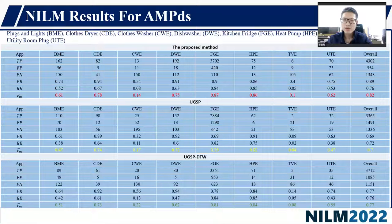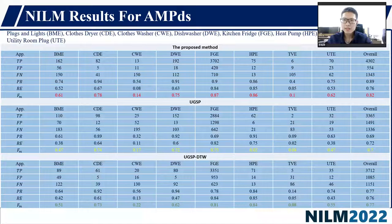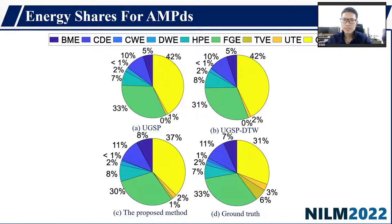Note that the power consumed by the fridge is around 110 W, which is close to the low-power operational states of other appliances, leading to high false positives and low precision and F1 score for UGSP. However, calculating STS similarity based on DTW distance and further STS matching in the proposed method contributed to an F1 score improvement of 0.12, confirming that information learned from extracted STS supports identifying fridge load against others. For demonstrating disaggregated energy shares, pie charts are drawn for experiments on the AMPDS dataset. The proposed method performs better than benchmarks for most appliances, consistent with previous table results. The underestimated power consumption share of TV for all methods also matches their high false negative results.